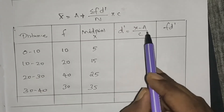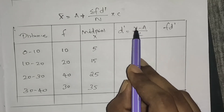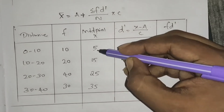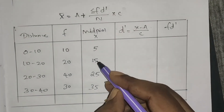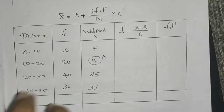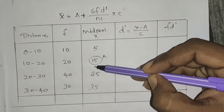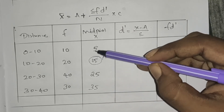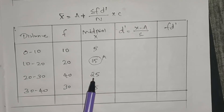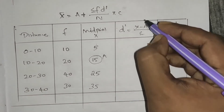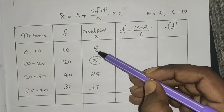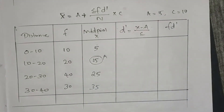We calculate d dash as x minus A divided by C. We select assumed mean A equals 15 from the mid values. The common factor C is 10, since the difference between consecutive mid values (5, 15, 25, 35) is consistently 10.